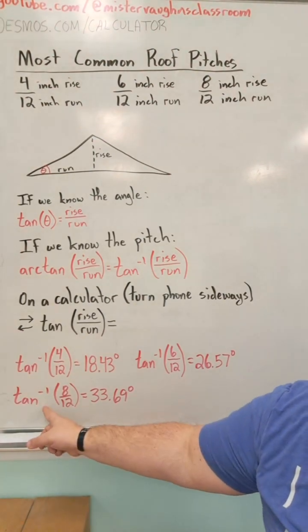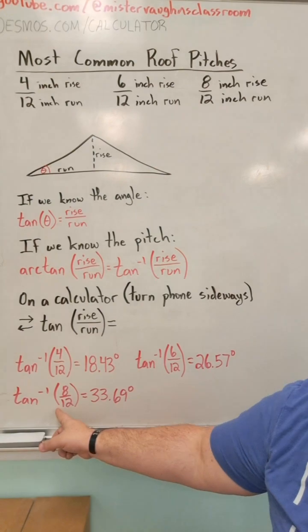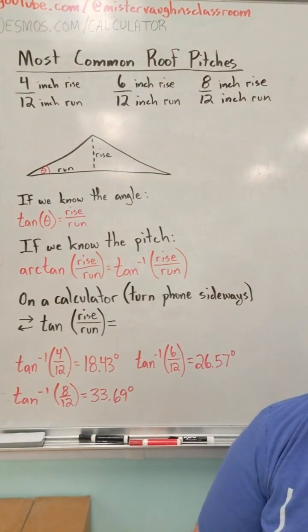And if I want the arc tangent for a roof that has an 8 over 12 pitch, I get 33.69 degrees. I hope you found this helpful, and I look forward to seeing you in the next one.